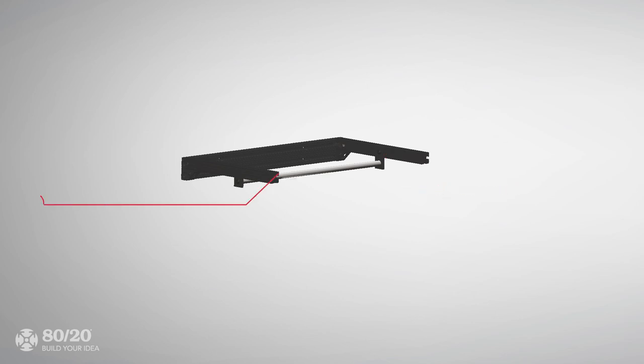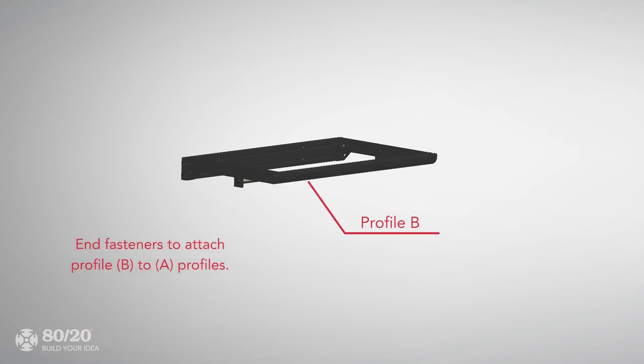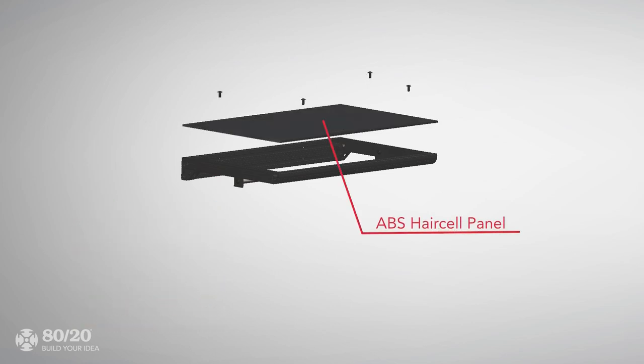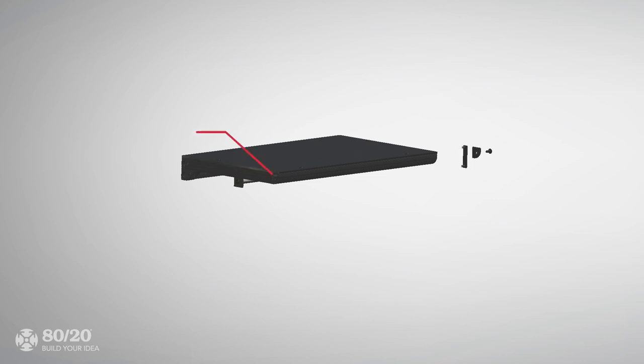Preload a T-nut on the upward facing T-slide of each profile A and profile B. Once the rod is in the desired location, we'll cap off our build with profile B using end fasteners. Now let's attach panel E using bolts to connect to the preloaded T-nuts on the build. Then we'll finish off the build with end caps.